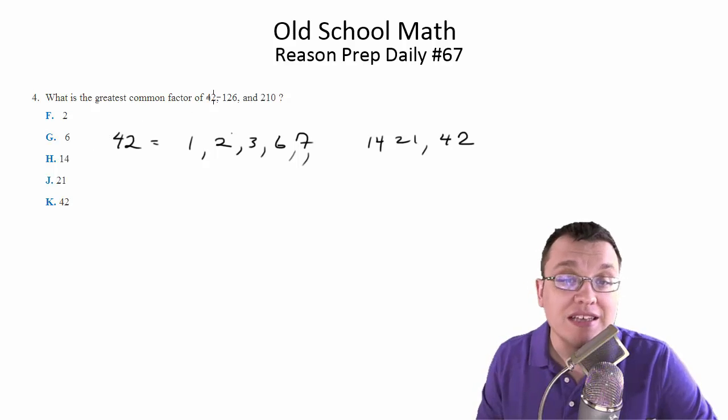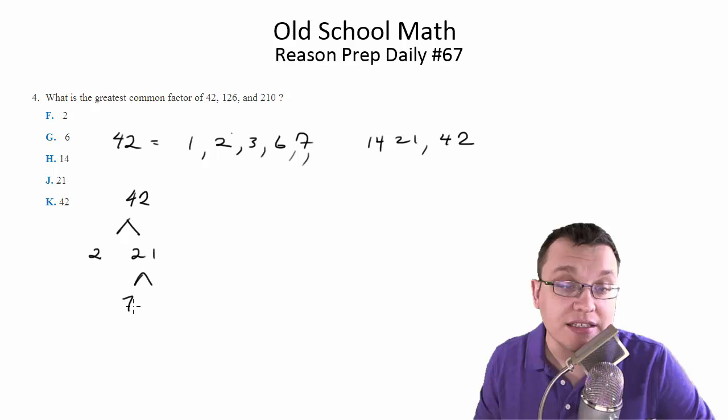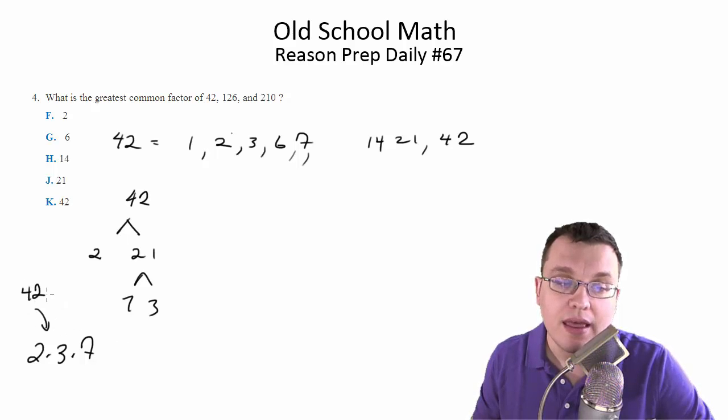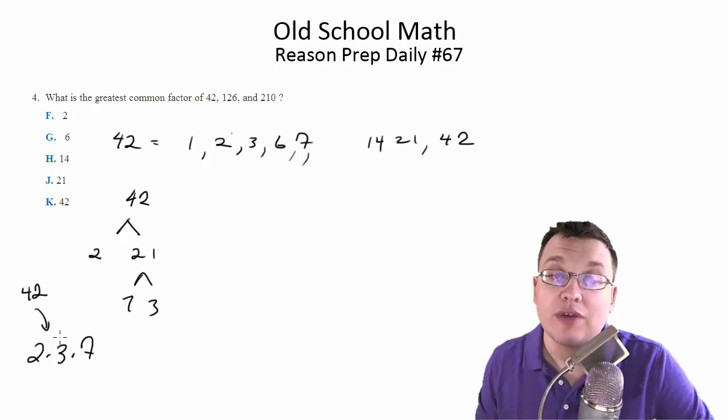Another way to do it is to find the prime factorizations of each of these. So for example, 42, you can break down into 2 and 21, and you can break 21 down into 7 and 3. So 42 is just 2 times 3 times 7 as its prime factorization. Once you get the prime factorizations for 126 and 210, you basically see how many factors they have in common, right?